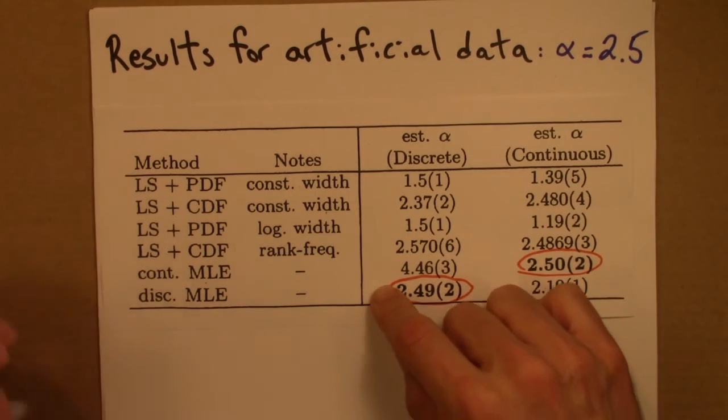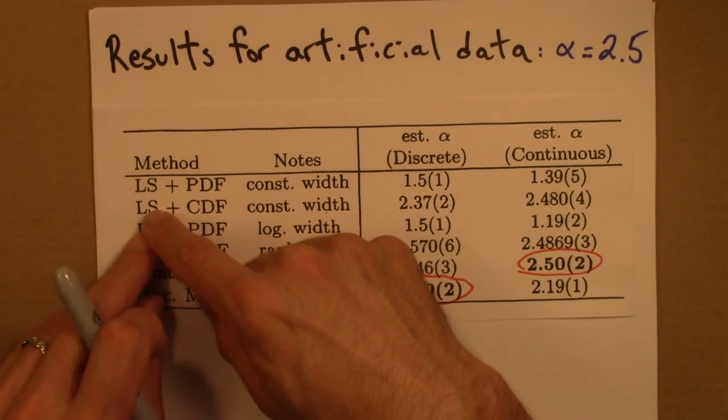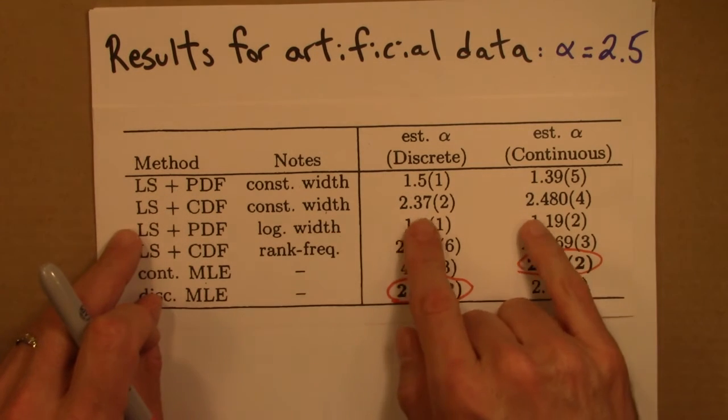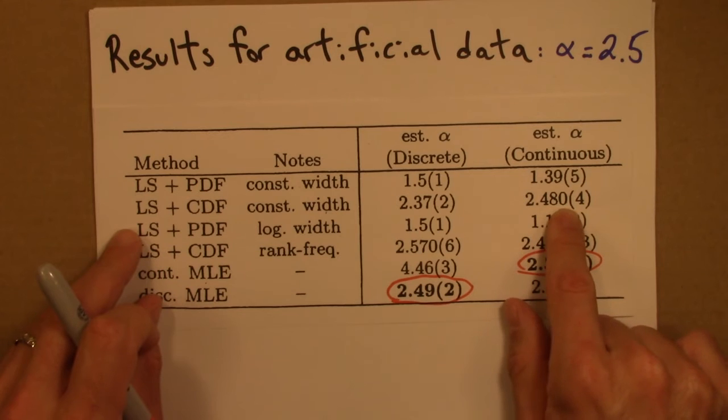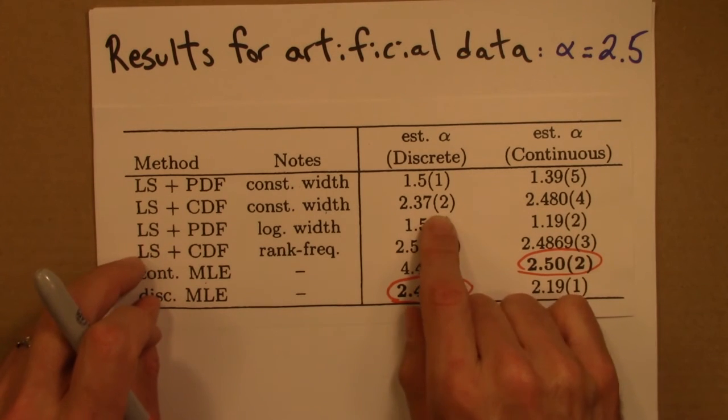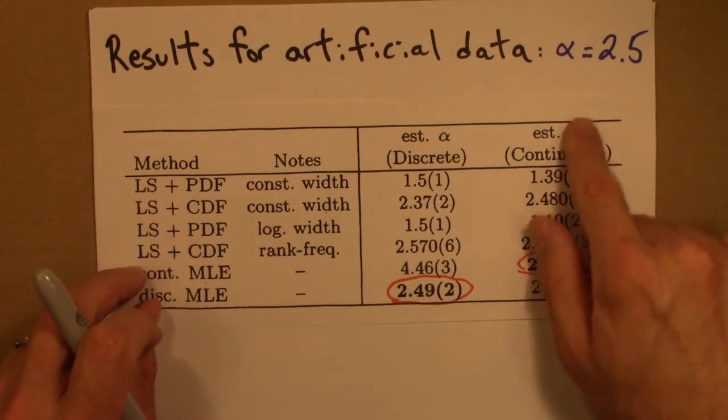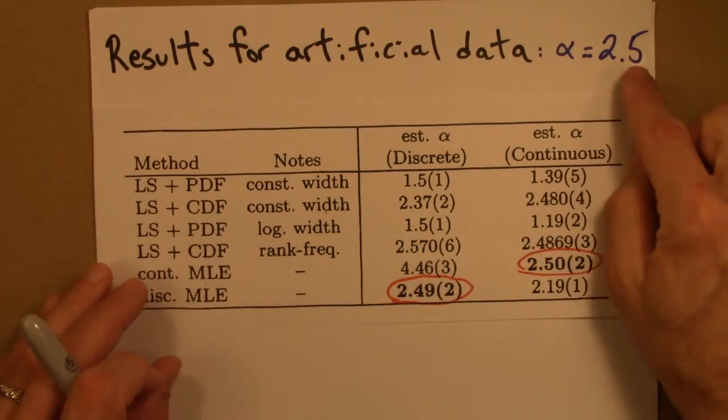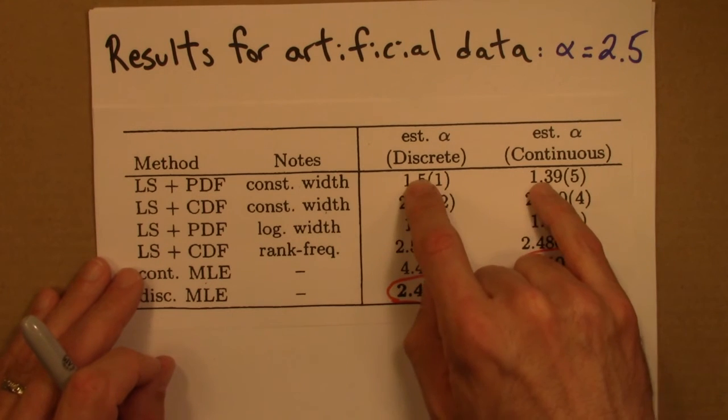If one uses the cumulative distribution function and does least squares fitting, one gets numbers that are much better. 2.48, 0, 2.37. Again, they're not accurate. The error bars on these are not within, do not bracket the true value. But, it's a lot better than this.